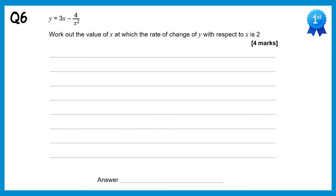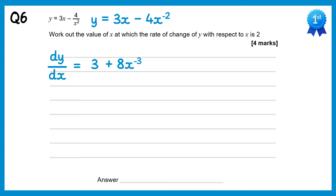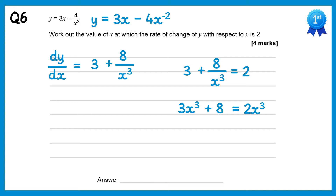For this question we'll rewrite the equation so the fraction is not there, writing the last part as negative 4x to the power negative 2. Differentiating: 3x gives 3, then negative 2 times negative 4 gives positive 8, reducing the power from negative 2 to negative 3, rewritten as 8 over x cubed. Setting this equal to 2: 3 plus 8 over x cubed equals 2. Multiplying both sides by x cubed gives 3x cubed plus 8 equals 2x cubed. Subtracting 2x cubed gives x cubed plus 8 equals 0, so x cubed equals negative 8, and cube rooting gives x equals negative 2.